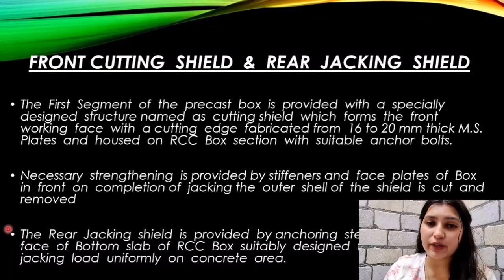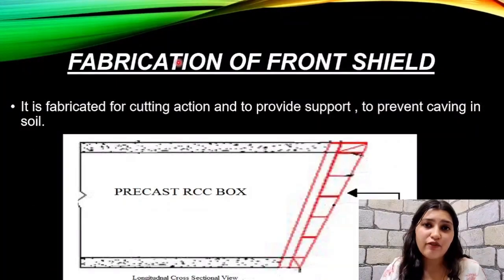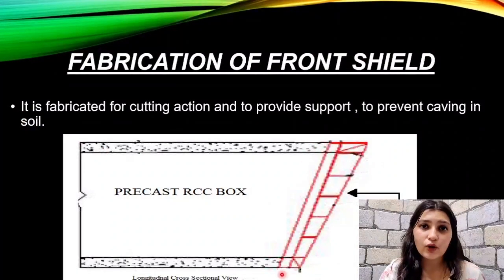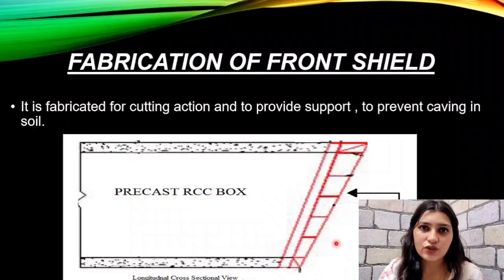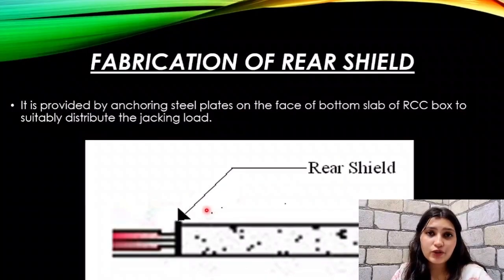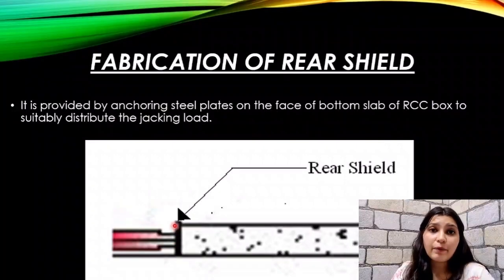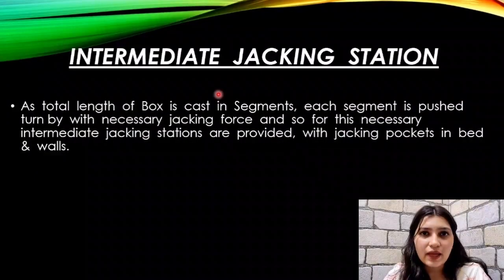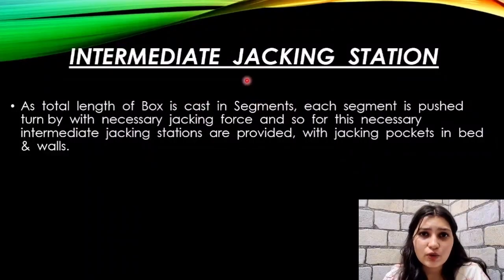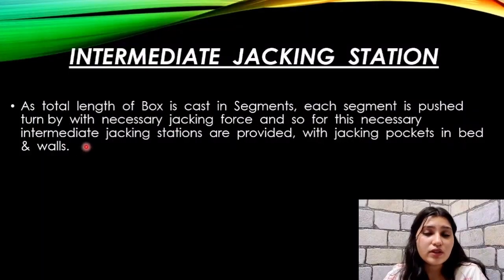The rear shield provides proper connection between the steel plate on the face of the bottom slab of RCC. The front shield is used for supporting and cutting action; it is cast and fabricated. The rear shield is used for fabrication and its anchoring plate is used for jacking. The next point is intermediate jacking stations. Since the boxes are constructed in many segments and the sizes are comparatively bigger, more force is needed to push them, so we provide intermediate jacking stations.